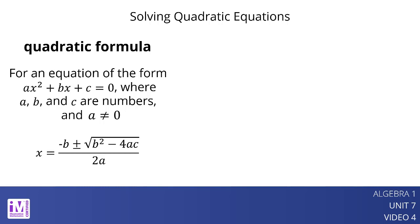Here is an example. 5x squared minus 3x minus 1 equals 0. For this equation, we see that a equals 5, b equals negative 3, and c equals negative 1. Let's solve it.